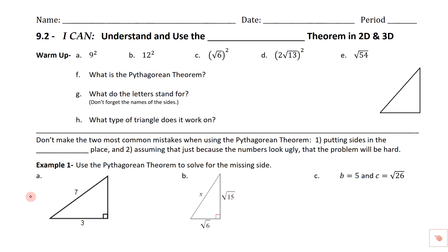Moving on with section 9.2, this is about understanding and using the Pythagorean Theorem. We're going to be using this in two dimensions and in three dimensions. In eighth grade, you practiced this in two dimensions and also came up with something we're going to review in the next section, the distance formula. But for right now, we're going to review some squares and square roots and then use the Pythagorean Theorem in a couple different settings.